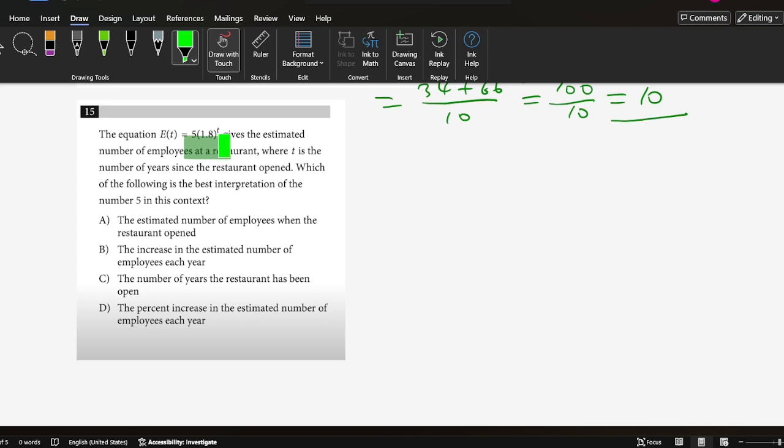So t is year. How many years? I think 1.8 here. I think 0.8 is the increased rate.